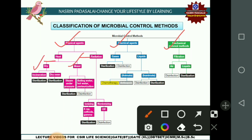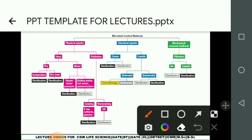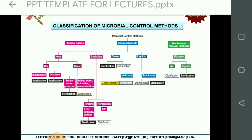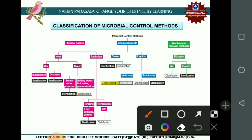Under dry heat, two methods are classified: one is called incineration and another is called dry oven. Under moist heat there are two methods: one is steam under pressure, that is autoclaving, and another is boiling water or pasteurization. Radiation is also a physical agent and is classified into ionizing or non-ionizing radiation. X-ray, cathode, and gamma ray come under ionizing, and UV ray comes under non-ionizing.